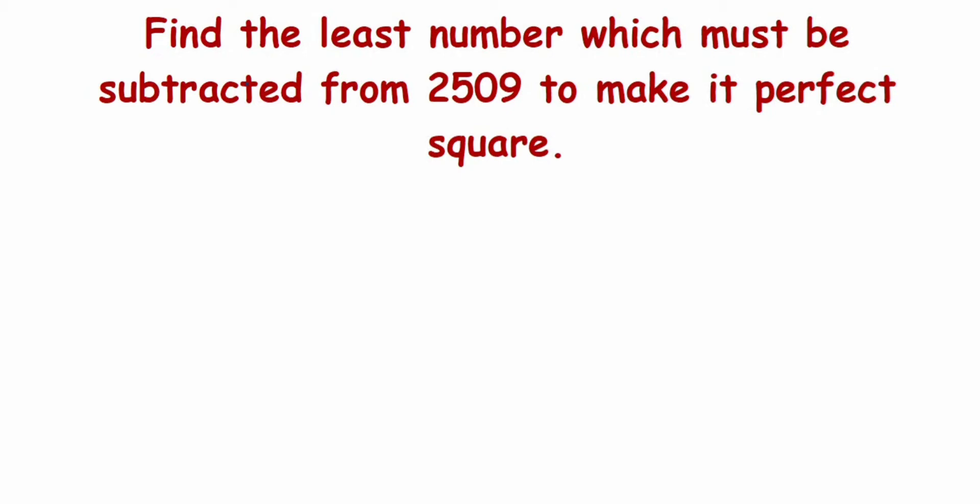Hi everyone, so here is a question on square and square root. The question is: find the least number which must be subtracted from 2509 to make it a perfect square. This means this number 2509 is not a perfect square.